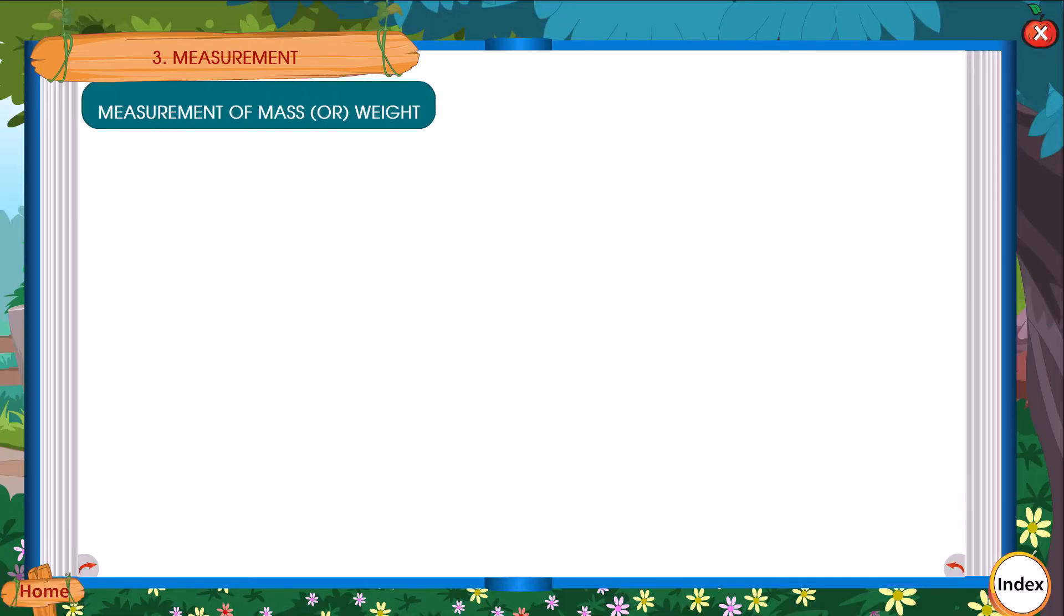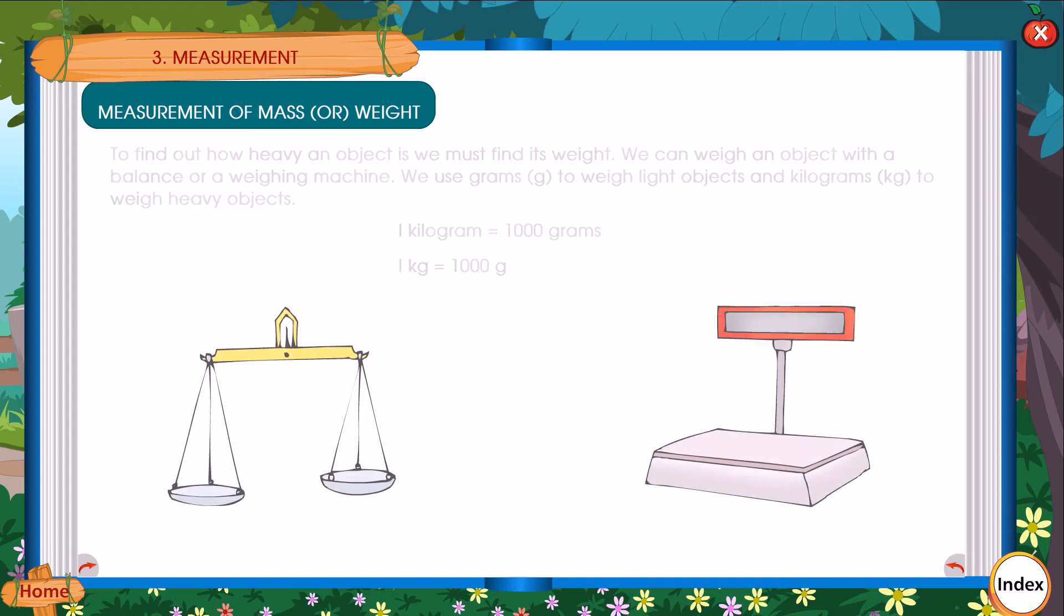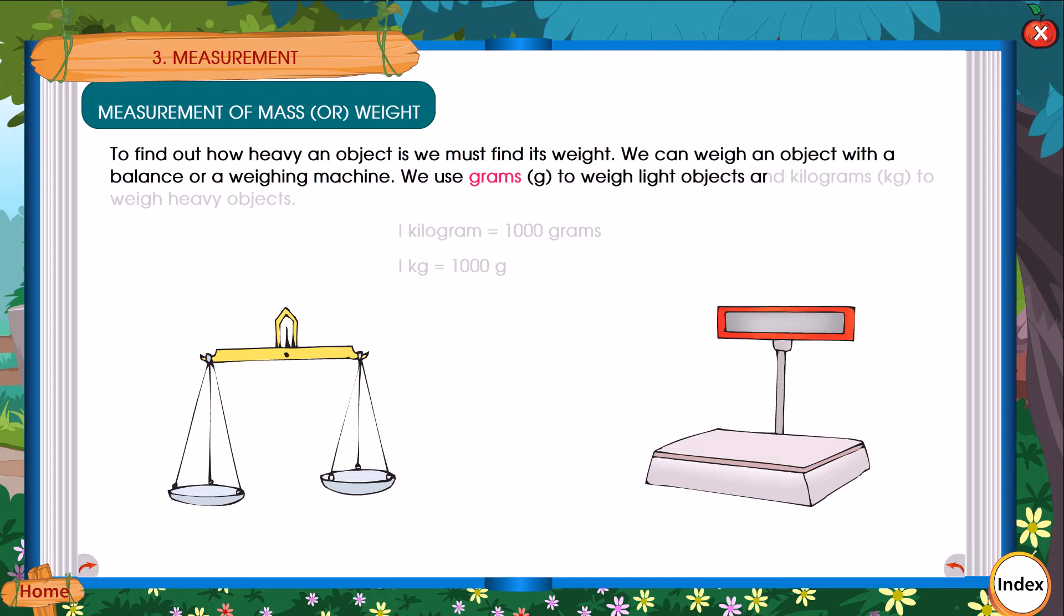Measurement of mass or weight. To find out how heavy an object is, we must find its weight. We can weigh an object with a balance or a weighing machine. We use grams to weight light objects and kilograms to weight heavy objects. 1 kilogram is equal to 1000 grams.